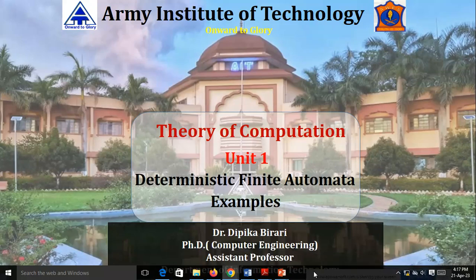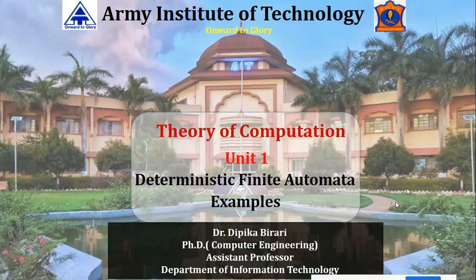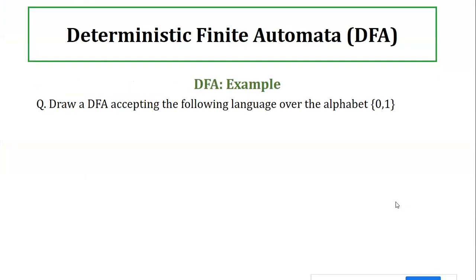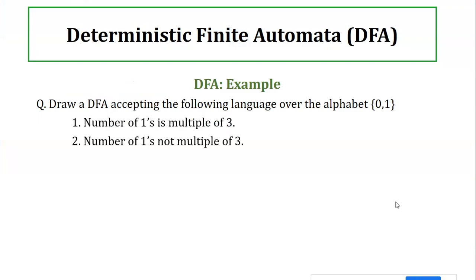Hello friends, welcome to the lecture series on Theory of Computation. We have already started with Deterministic Finite Automata in the previous session and will continue with examples on the same topic. In today's session, we'll design a DFA over alphabet {0,1} where the number of ones is a multiple of three, and a second DFA where the number of ones is not a multiple of three.